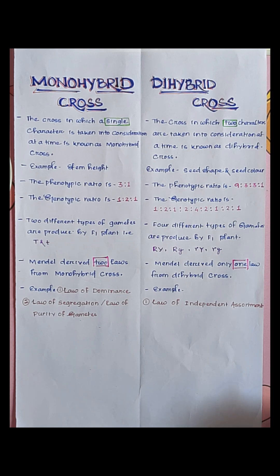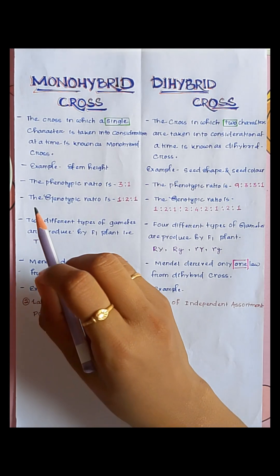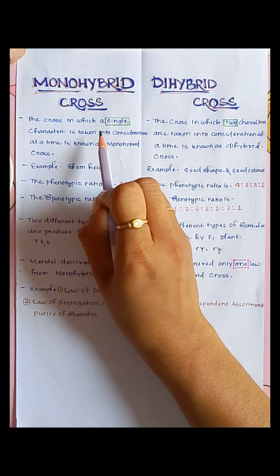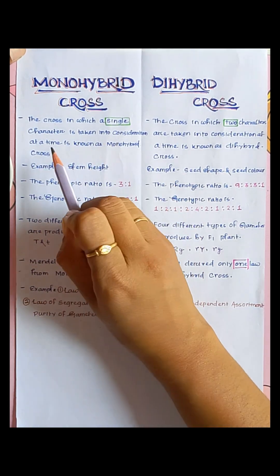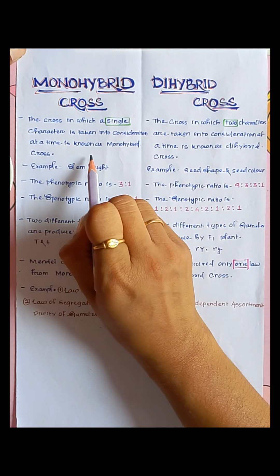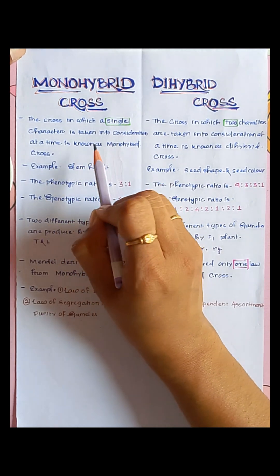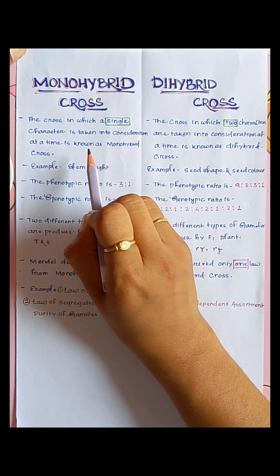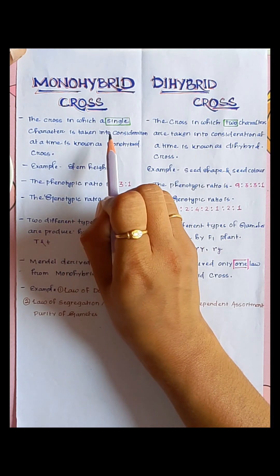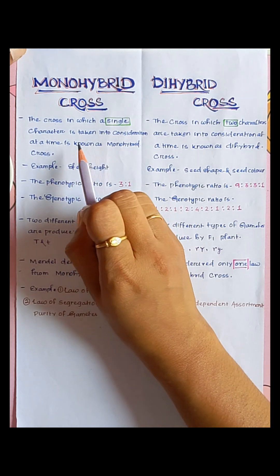In today's class, we are going to discuss the differentiation between monohybrid cross and dihybrid cross. First, we are going to know what is monohybrid cross. The cross in which a single character is taken into consideration at a time is known as monohybrid cross.